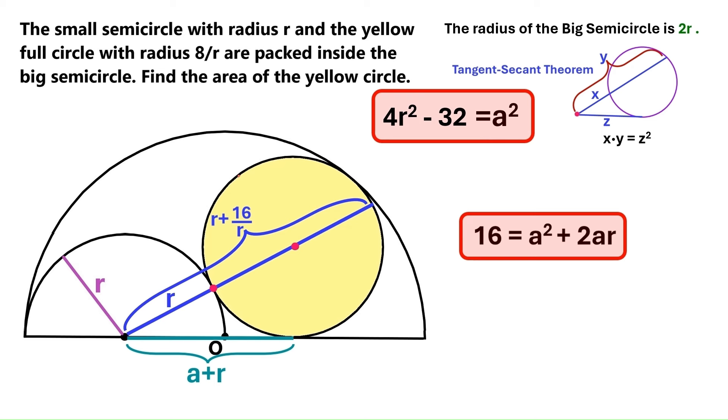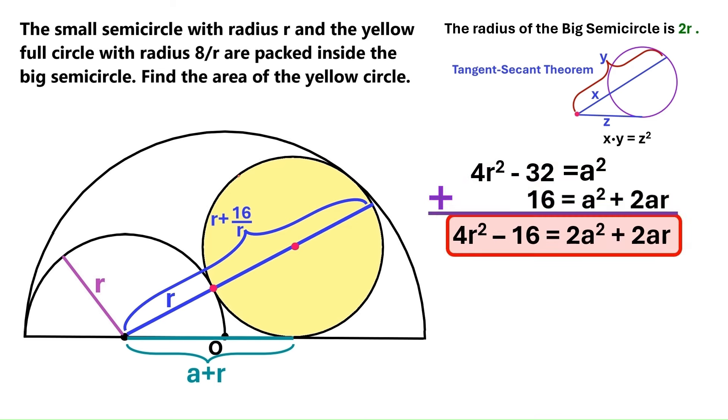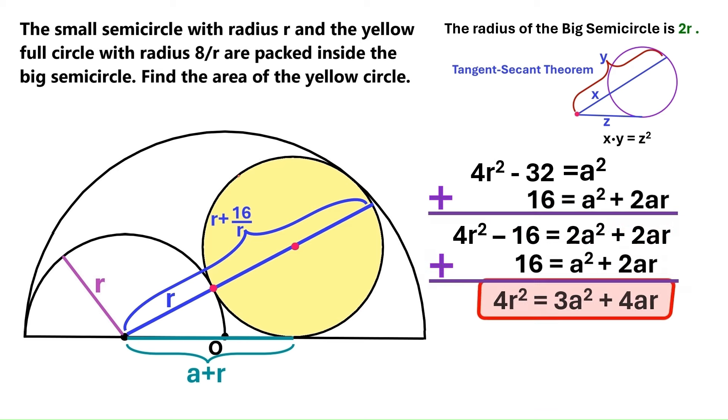Now, let's take both equations and bring them together. And we'll add them together to get this brand new equation. But I want to get rid of this minus 16. So I'll add this equation to it again.